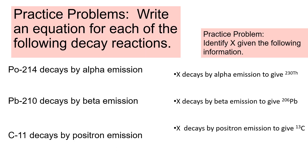Practice problem: Po-214 decays by alpha emission. The parent is Po; finding it on the periodic table, it is element number 84. Alpha decay gives off 4-2 helium. So: something plus 2 is 84 — that's 82 — and something plus 4 is 214 — that's 210. Element 82 is lead, Pb. So the product is Pb-210.